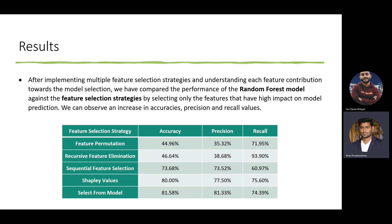After following these feature selection strategies and model explainability, we retrained the random forest model selecting only the features with higher impact on model prediction. The performance improved: accuracy of 80, precision of 77, and recall of 75, followed by others. Overall, we made use of feature selection and SHAP values to explain model performance, which is the main focus of our research. That is all. Thank you.